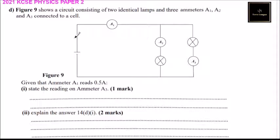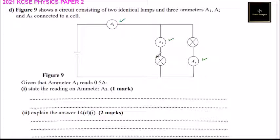Question 14D: Figure 9 shows a circuit consisting of two identical lamps and three ammeters A1, A2, and A3 connected to a cell. In the figure we have ammeter 1, ammeter 2, ammeter 3, bulb 1, bulb 2, and the cell.